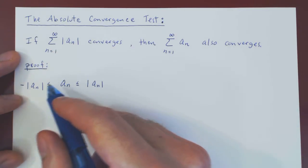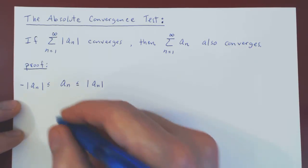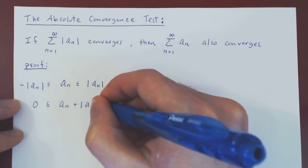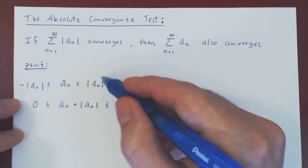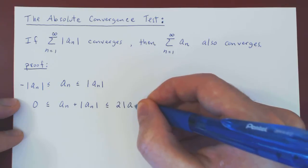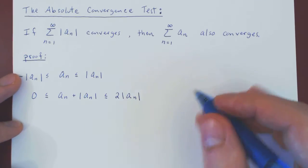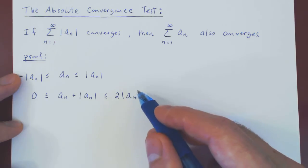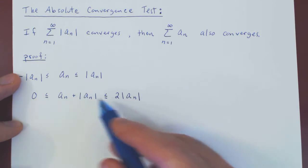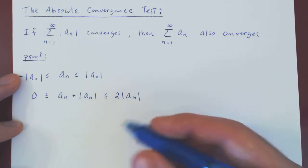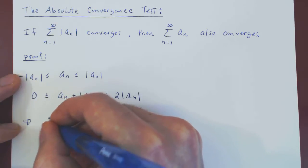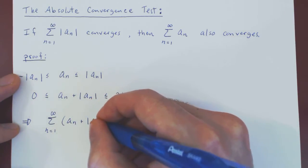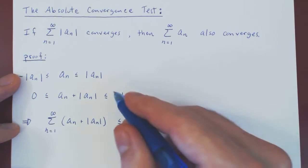Now let's add across both inequalities the absolute value of aₙ. We obtain that 0 is at most aₙ plus its absolute value, which is at most the absolute value of aₙ plus itself, therefore twice the absolute value of aₙ. We now have two non-negative sequences — aₙ plus its absolute value, and twice the absolute value of aₙ — so these terms are smaller than these terms for every n, and if we sum the smaller terms, this must be at most summing the larger terms.